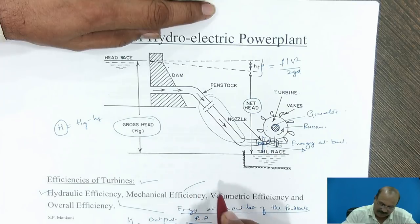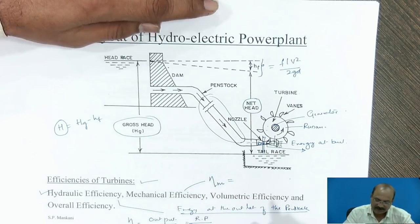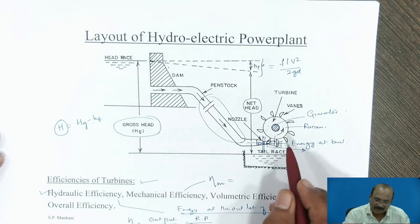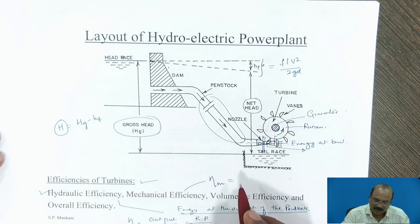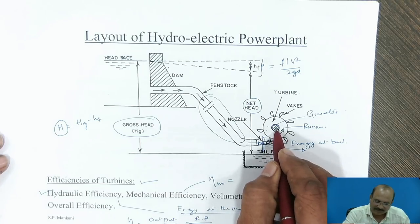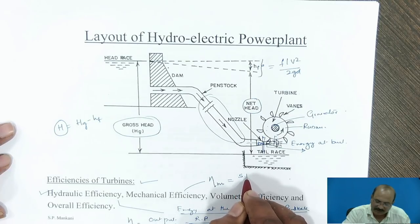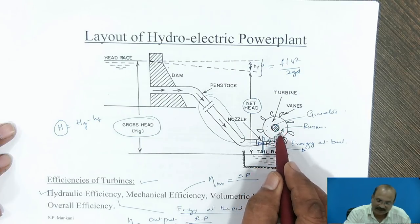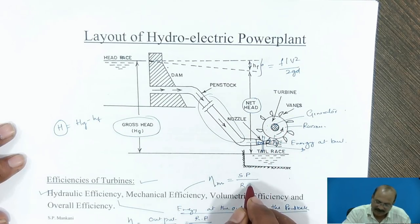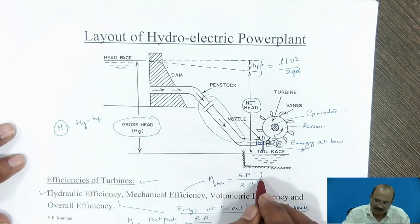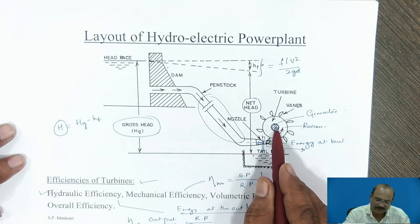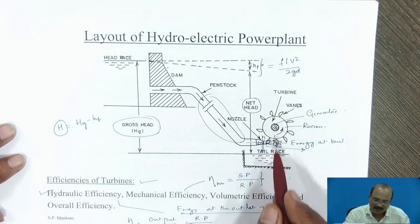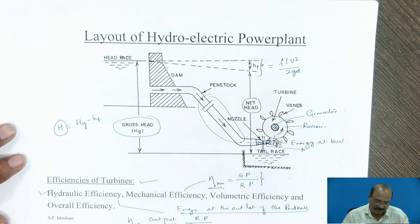Next is mechanical efficiency. Mechanical efficiency is explained as the power available at the runner compared with the power available at the shaft. The output is the shaft power, so mechanical efficiency equals shaft power divided by runner power. This is because the total energy available at the runner is not fully transferred to the shaft — there will be mechanical losses represented by mechanical efficiency.